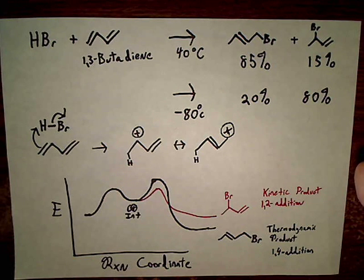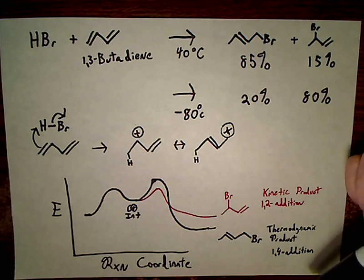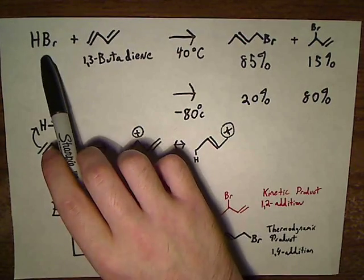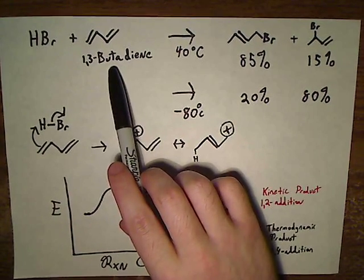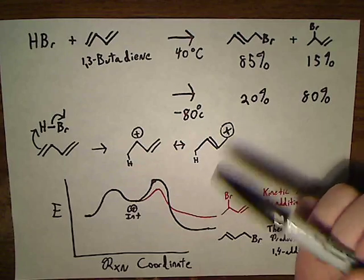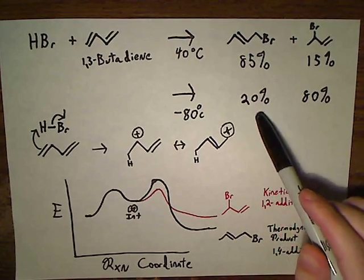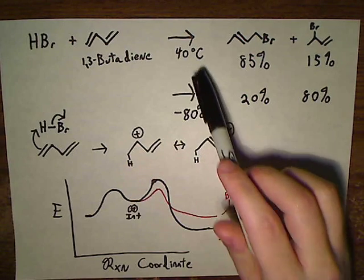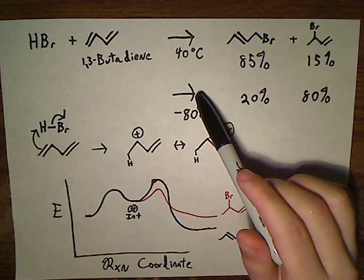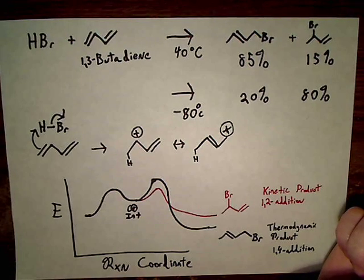In this video, I'm going to be talking about an electrophilic addition reaction that occurs between hydrobromic acid and 1,3-butadiene, and this is kind of an interesting reaction because you get a different distribution of products depending on the temperature that you do the reaction at.